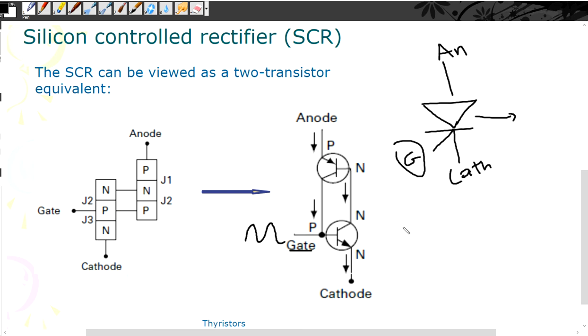So to turn off the SCR we can reverse the voltage across and that will turn off the SCR.